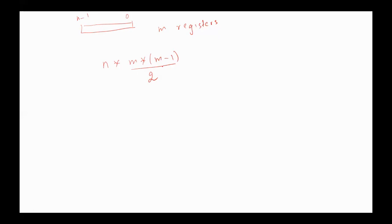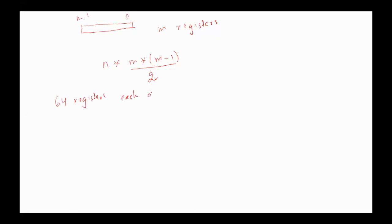In this case, the number of wires will be excessive and the design of the circuit will be very complex. For example, if we have 64 registers each of size 16 bits, then we need 32,256 wires in order to connect all these registers together, without considering the memory connections and without considering the self-connections.